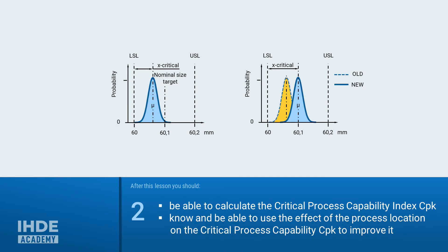Second, after this lesson you should be able to calculate the critical machine and process capabilities. In addition to the spread, you should know the influence of the process location on the process capability in order to be able to use this knowledge as a starting point for improvements.